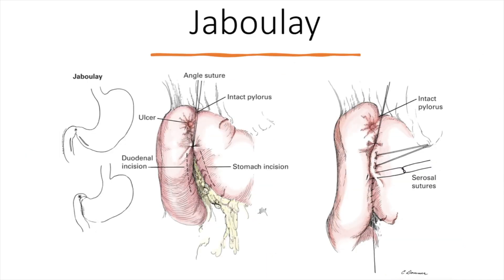The last technique is the Jaboulay pyloroplasty. Similarly to the Finney, this is also a side-to-side gastroduodenostomy. But instead of one large incision tracking down to the duodenum, there are two incisions: one made in the antrum of the stomach, and one made further distally in the duodenum. The key difference is that the pylorus is left completely intact and untouched — all you do is approximate these two incisions together to create the anastomosis.